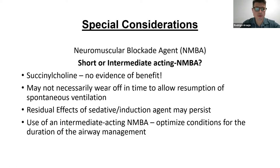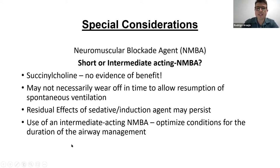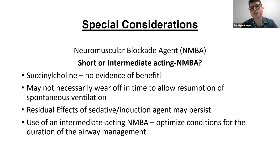Our first special consideration is about neuromuscular blocking agents: which to use — short or intermediate acting. There is no evidence of benefit to using succinylcholine, because the patient will not resume spontaneous ventilation solely because of succinylcholine — there are residual effects of the other agents. With the use of intermediate-acting neuromuscular blocking agents, we optimize conditions for the duration of airway management. If you use succinylcholine and have a failed first attempt, on your second attempt the patient will have no neuromuscular block and you'll need another agent. It's better to start with intermediate-acting agents — that's the recommendation.